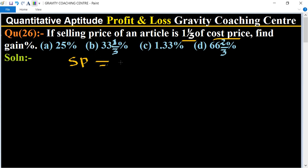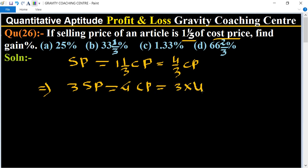According to the question, SP is equal to one whole number one by three of CP, means equal to 4 by 3 CP. So this implies that 3 SP equal to 4 CP equal to 3 into 4. Suppose let.